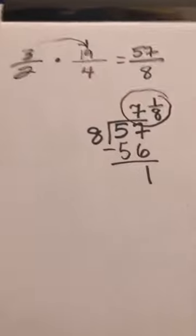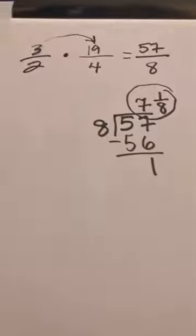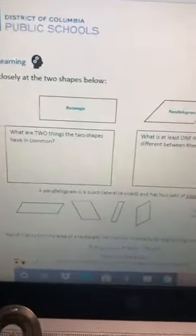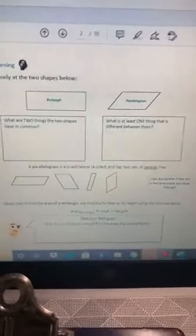That's how we do number seven, and the reason we did that warm-up is because we're going to need that skill for what we're learning today. We're on the part that says New Learning — that's the exciting part. I need you to look closely at the two shapes: we have a rectangle and we have a parallelogram.